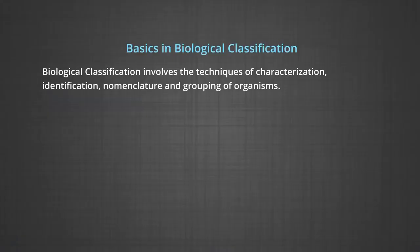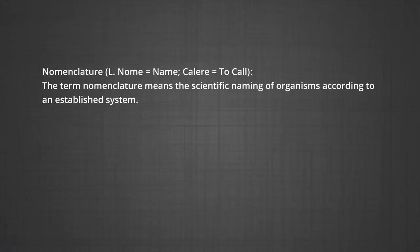Basics of biological classification: biological classification involves the techniques of categorizing, identification, nomenclature, and grouping of organisms. First and foremost, it is important to categorize and name the organism. Nomenclature means the scientific naming of organisms. According to an established system, the naming of plants on a scientific basis is called botanical or plant nomenclature. In earlier days, common or vernacular names were in use, which generally changed with change of language. Later, in the hunt for one common internationally accepted name for a species, scientific names were introduced in the form of polynomial, binomial, and trinomial systems of nomenclature.